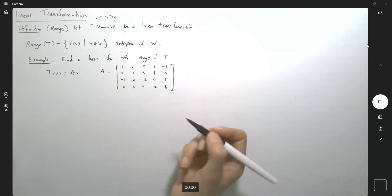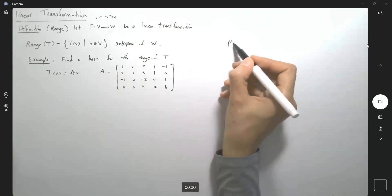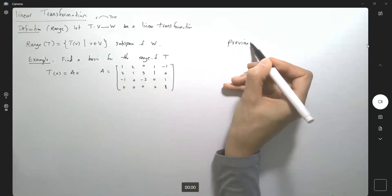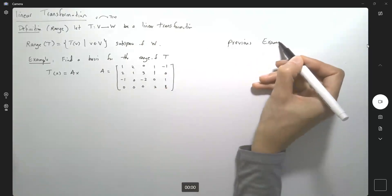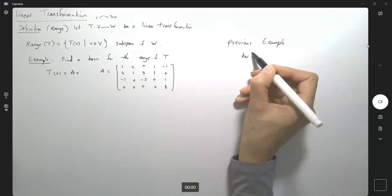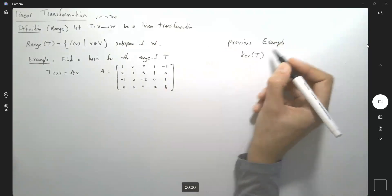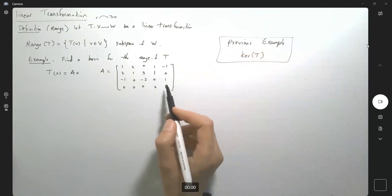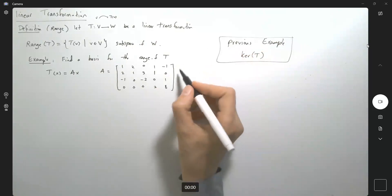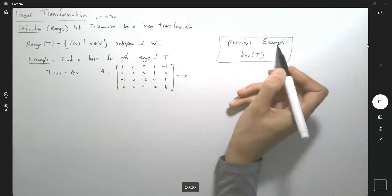This is exactly the same as we did in previous example talking about the kernel. So if you want to see how I reduce the matrix, you can go back to previous example.